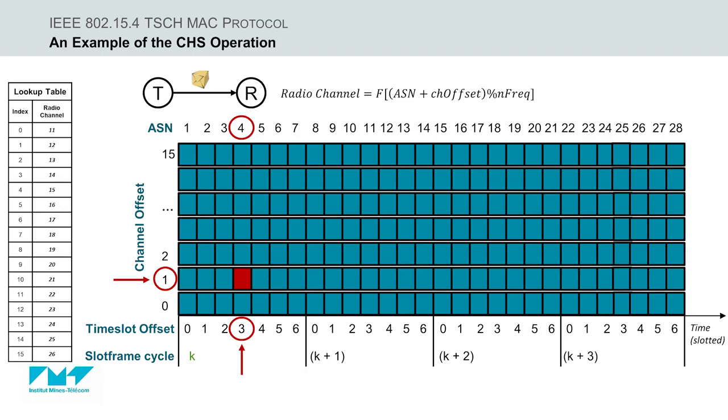4 plus 1 equals 5, then 5 modulo 16, the result is 5. We then consult the lookup table to obtain the actual radio channel, and in this case the value 5 indicates the radio channel 16.